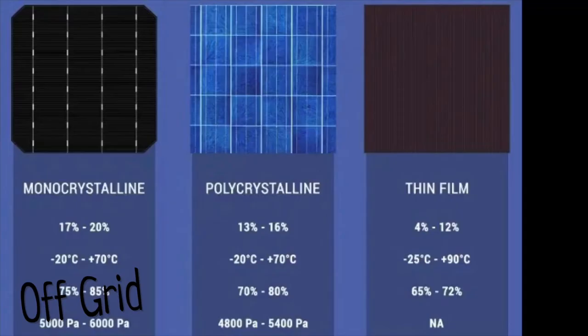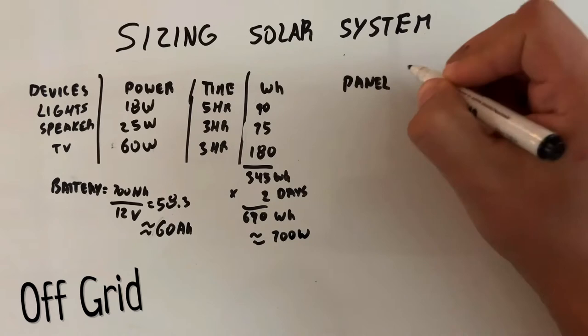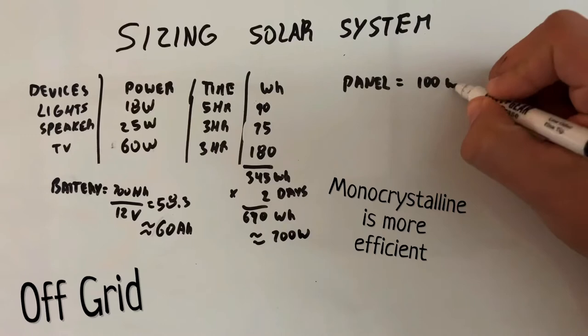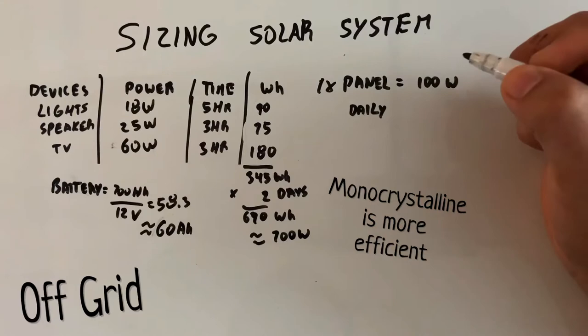The most efficient panel is the monocrystalline, this monosilicon panel. It's more efficient, but it's also more expensive. So for system, we're going to use the monocrystalline. So we need, so one panel produces 100 watts, and on average, the panel has about five hours of direct sunlight.